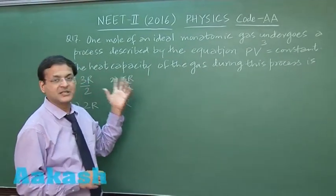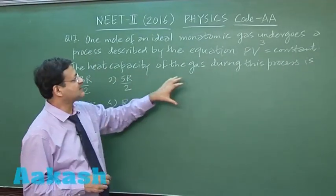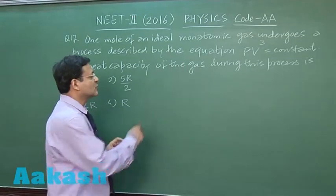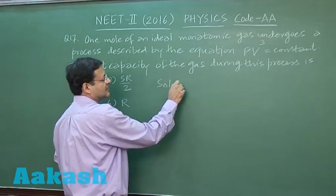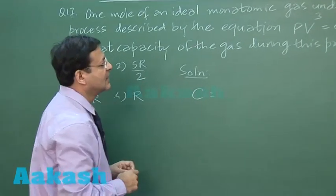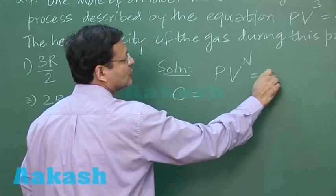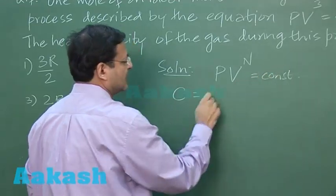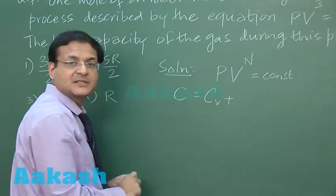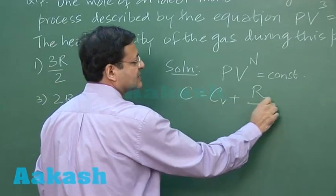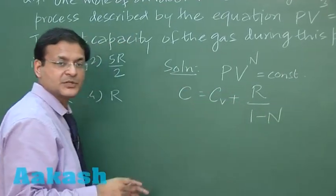Now they are asking what is the heat capacity of the gas during this process. So it is a direct formula based question. For polytropic process PV raise to the power N is equal to constant, the heat capacity has the standard relation CV plus R upon 1 minus N.